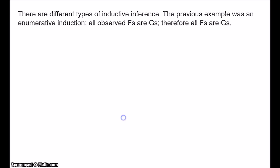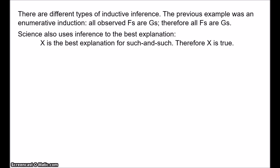Now, throughout this series, I'm going to use the term induction to cover all forms of non-deductive inference. There are different types of induction. The example just presented with the swans is an example of enumerative induction. So with an enumerative induction, we reason from the premise that all observed f's are g's to the conclusion that all f's are g's. However, science also appeals to what's known as inference to the best explanation. On this form of inference, we say that x is the best explanation for some phenomenon, therefore x is true. For example, 65 million years ago, dinosaurs went extinct.